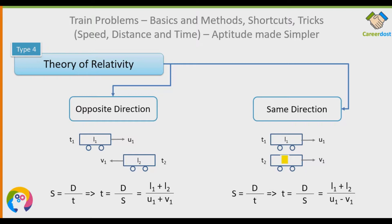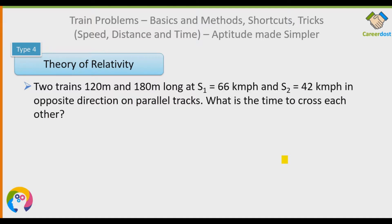To summarize: L1 + L2 divided by (U1 − V1) for same direction, and L1 + L2 divided by (U1 + V1) for opposite direction. Now let's solve some questions to understand this better.